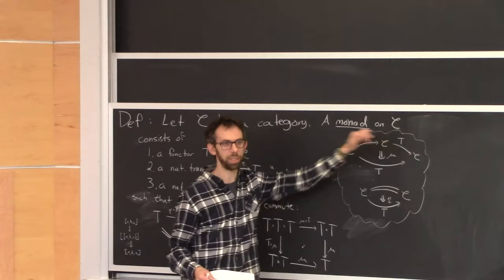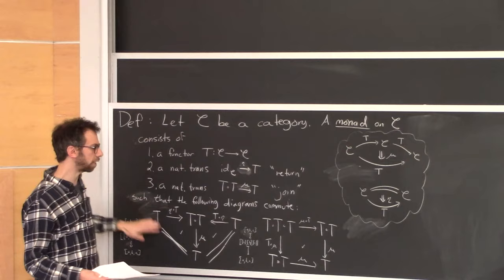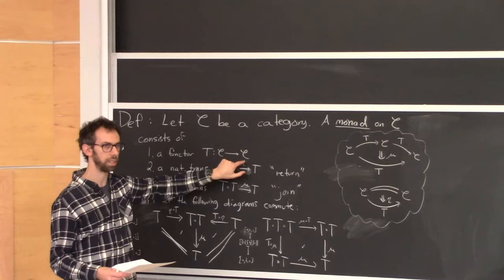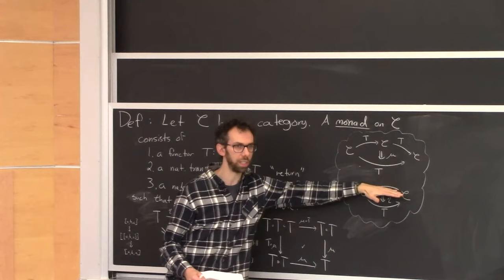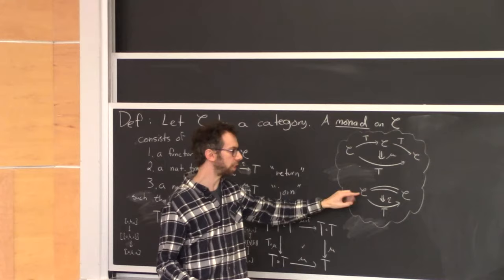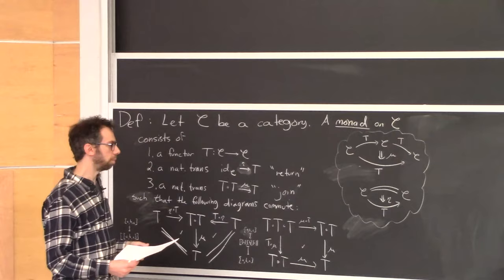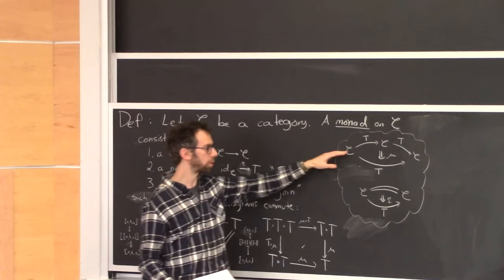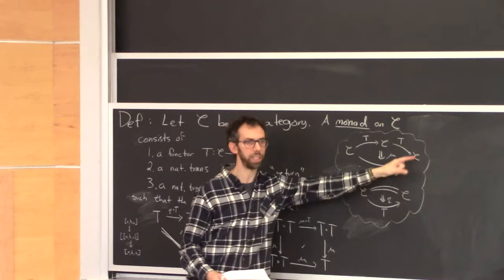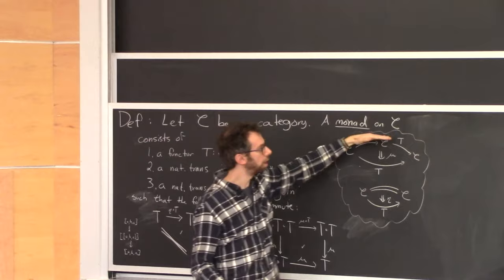To remind you, a monad on C — maybe C is the category of sets — has three things and satisfies a couple of rules. It comes with a functor from C to C, a natural transformation from the identity functor on C to T, which means for any object of C we get a map from that object to T of that object. And it comes with something called the join that takes T of T of an object and gives you a map to just T of that object.